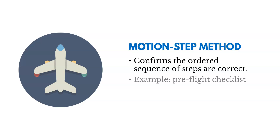The motion step method confirms that the ordered sequence of steps in a process are correct. For example, if you're flying planes or launching rockets, you'll have a pre-flight checklist that you follow step by step to make sure it's done the right way every time.